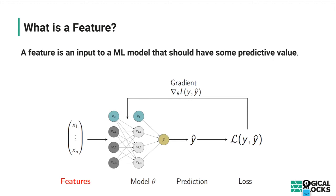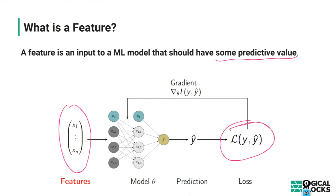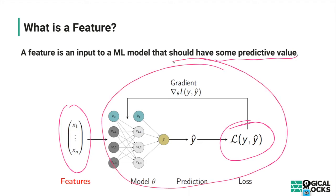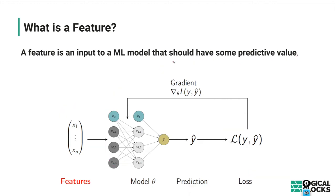So what is a feature? A feature is some input to a machine learning model — it's the data that goes in. It's represented as a vector; we often use the term feature vector. The features you input into a model should have some predictive value. If it's just random data, it won't help you make predictions. This is the training of our model — we're computing the loss over our training dataset, and later we'll use that model to make predictions.